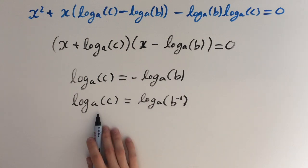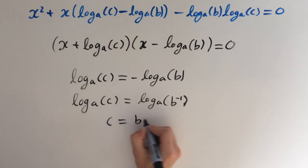So now we can just use the anti-logarithm, and this gets rid of both of the logarithms on both sides. So we get c equals b to the minus 1, and b to the minus 1 is the same as saying 1 over b. So our final answer is c equals 1 over b.